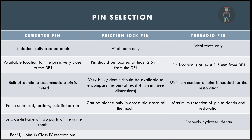Friction lock pins are indicated only in vital teeth. The pin should be located at least 2.5 mm from the dentino-enamel junction; if the distance is less, it can lead to tooth fracture. Very bulky dentine — at least 4 mm in three dimensions — should be available to circumferentially encompass the pin. Friction lock pins can only be placed in very accessible areas of the mouth, since the tapping required is not possible in inaccessible areas.